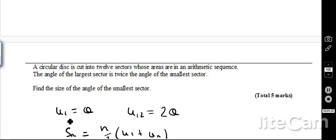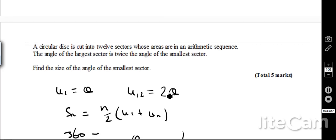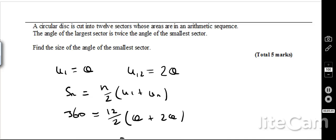We can say that u1, the first term, is theta, and u12, the twelfth term, is 2 theta, because it's twice as big. I can then recognise that I can use the SN formula, so the sum formula is n over 2, brackets u1 plus un.